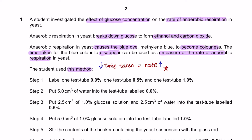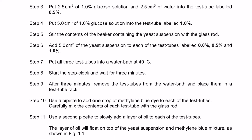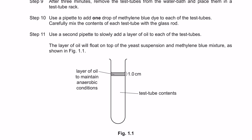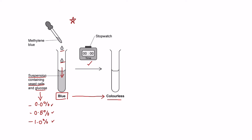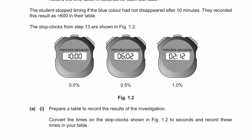The student uses this method. To summarise the experiment: you will have a suspension containing yeast cells and glucose at 3 different concentrations of 0, 0.5, and 1%. Methylene blue is added into the solution — it will first be blue in colour, and after a certain time it will turn colourless. We are going to measure the time taken for each of these different concentrations. The student stopped timing if the blue colour had not disappeared after 10 minutes.